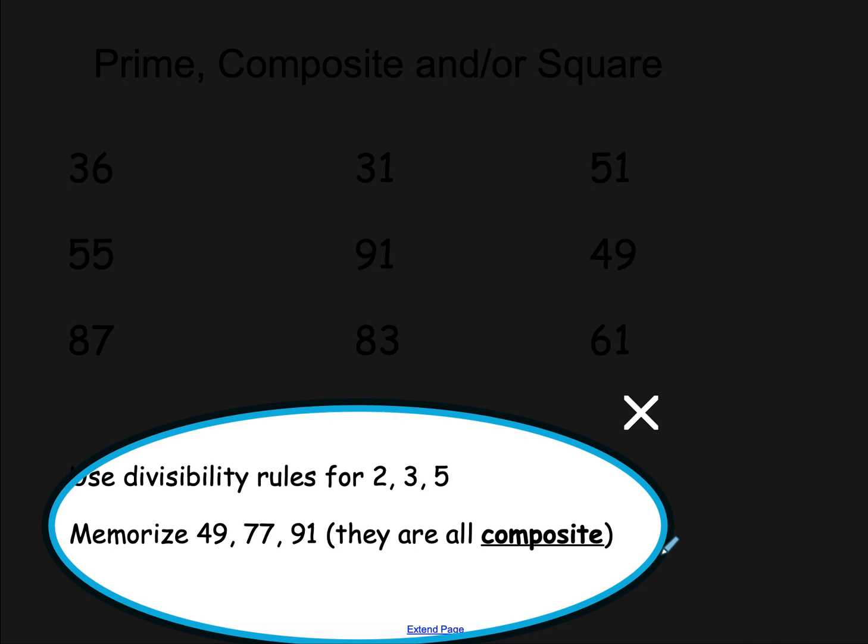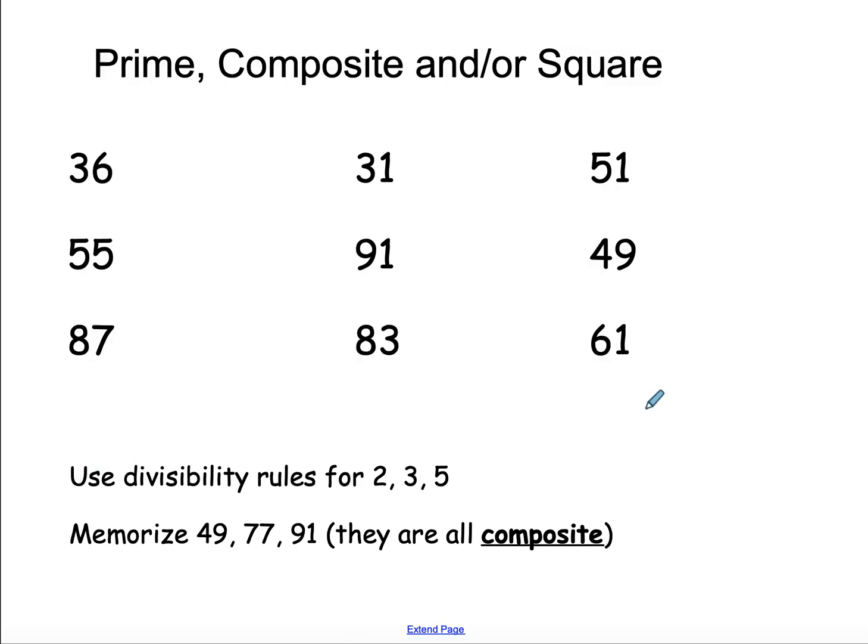So there's a couple of numbers you need to memorize. 49, 77, and 91. These are all composite. 7 times 7, which means 49 is also square. 7 times 11 is 77, and 7 times 13 is 91.